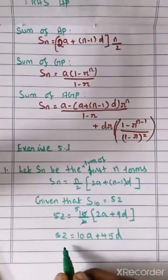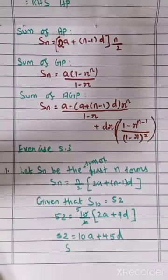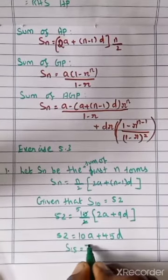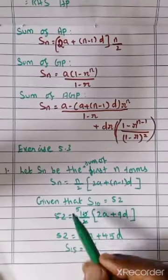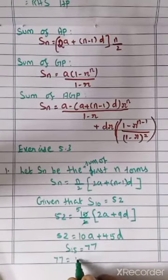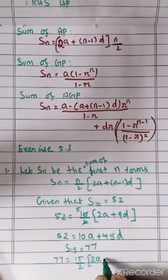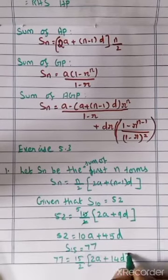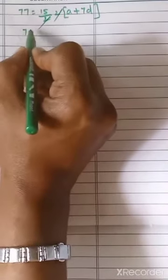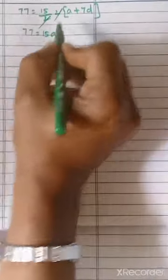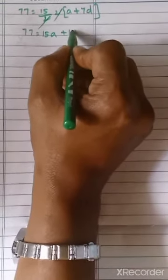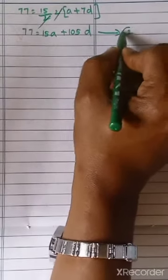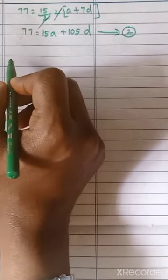And it is also given that S_15 equals 77. Substituting N equals 15: 77 equals 15 by 2 times (2A plus 14D). Taking 2 common inside: 77 equals 15 times (A plus 7D), giving 77 equals 15A plus 105D. Now we have two equations and we have to solve them to get the D value.